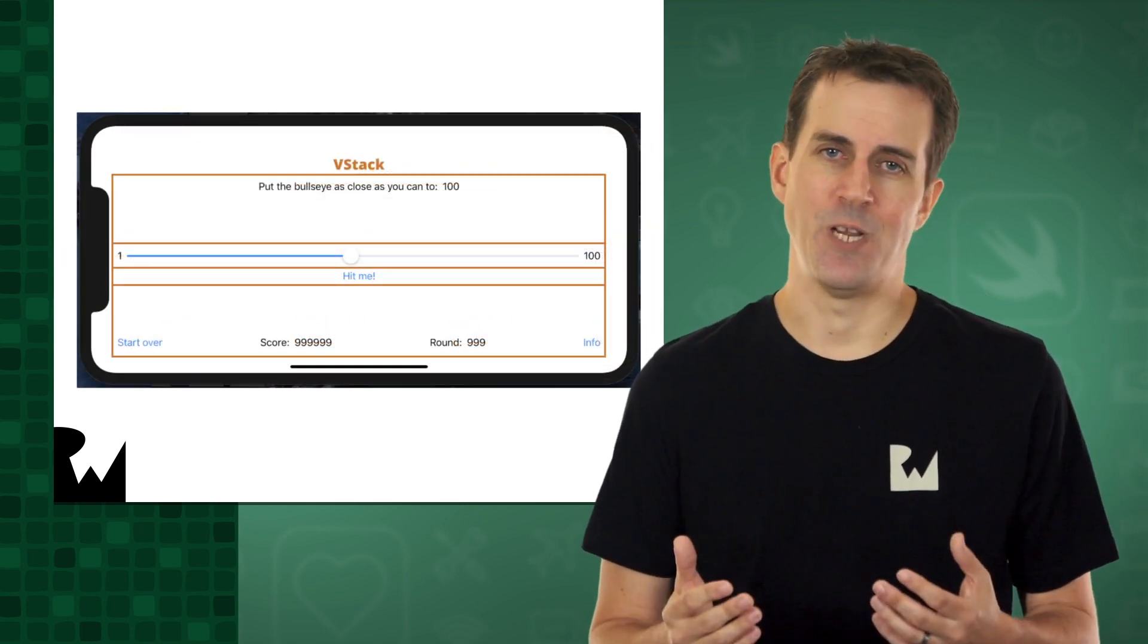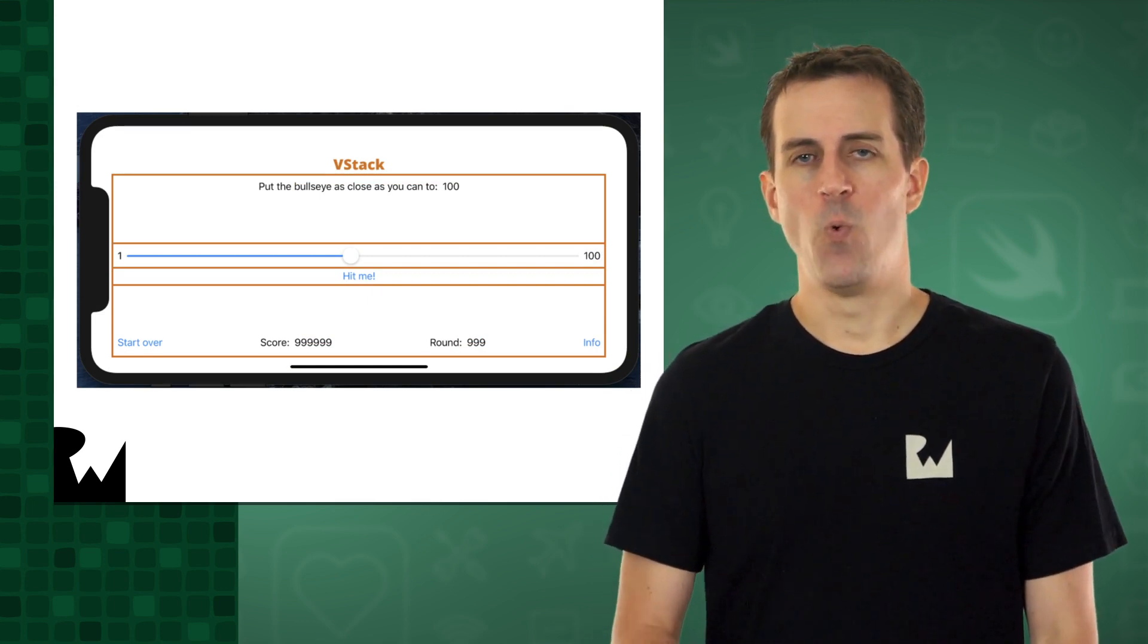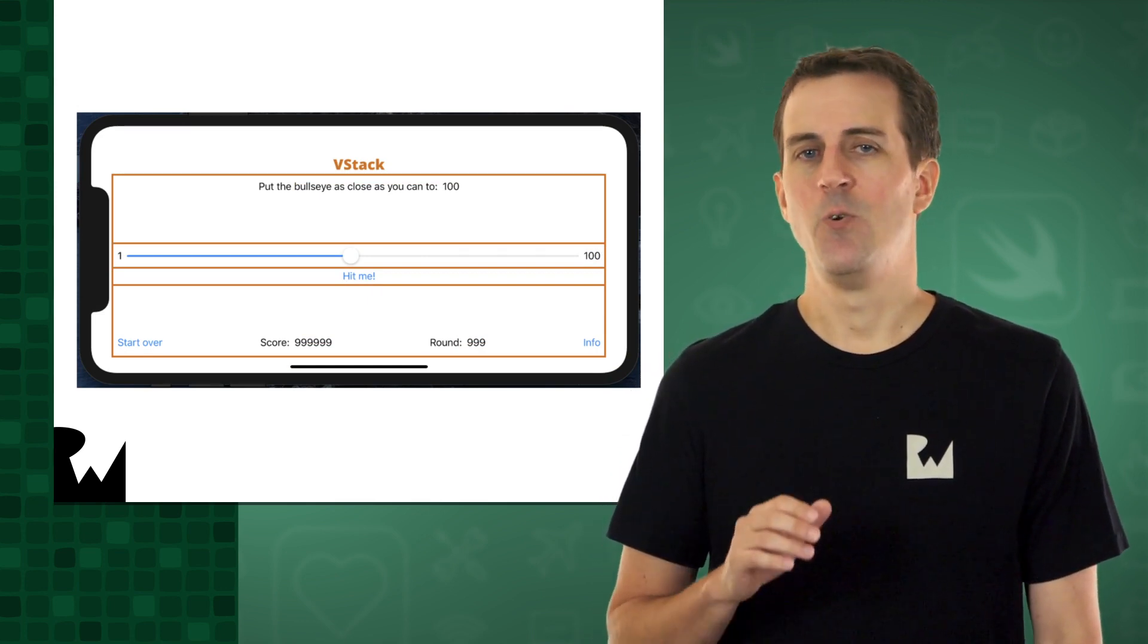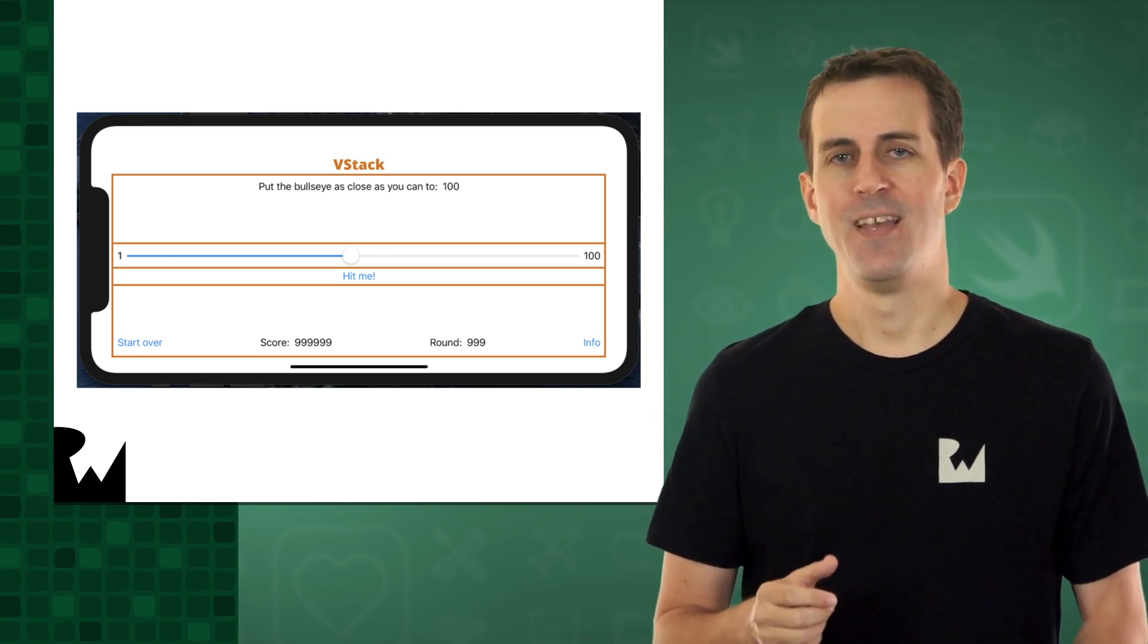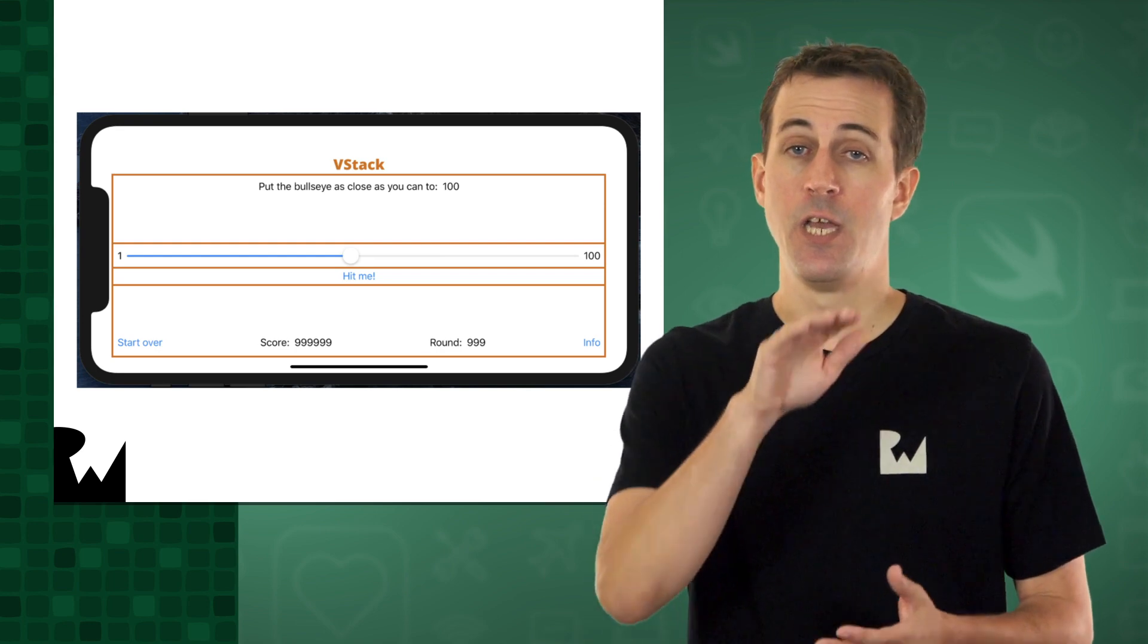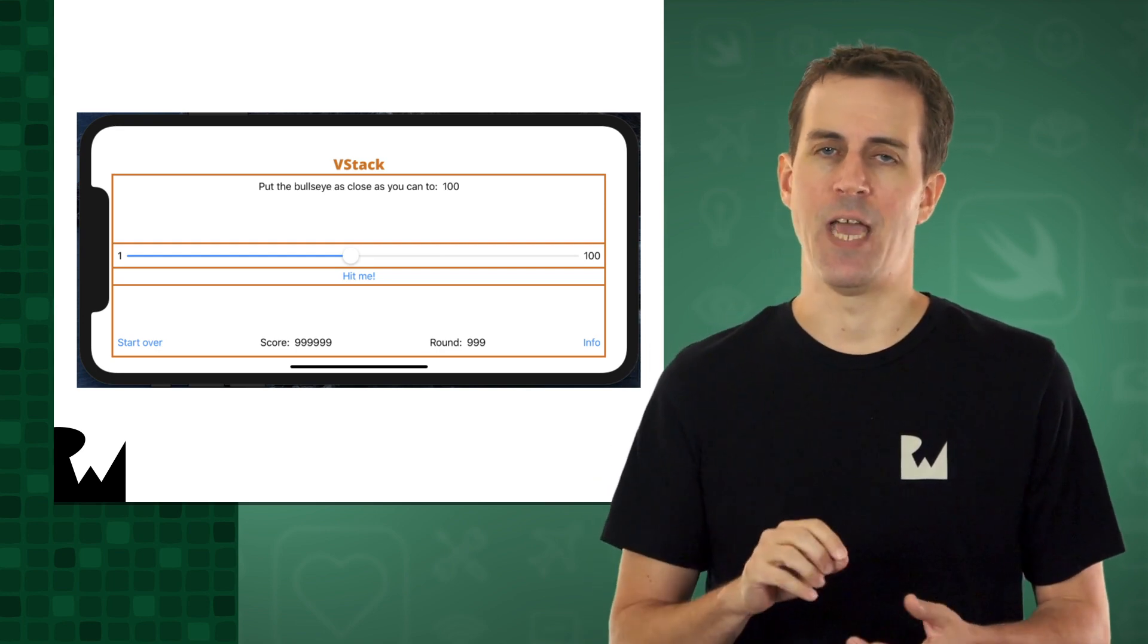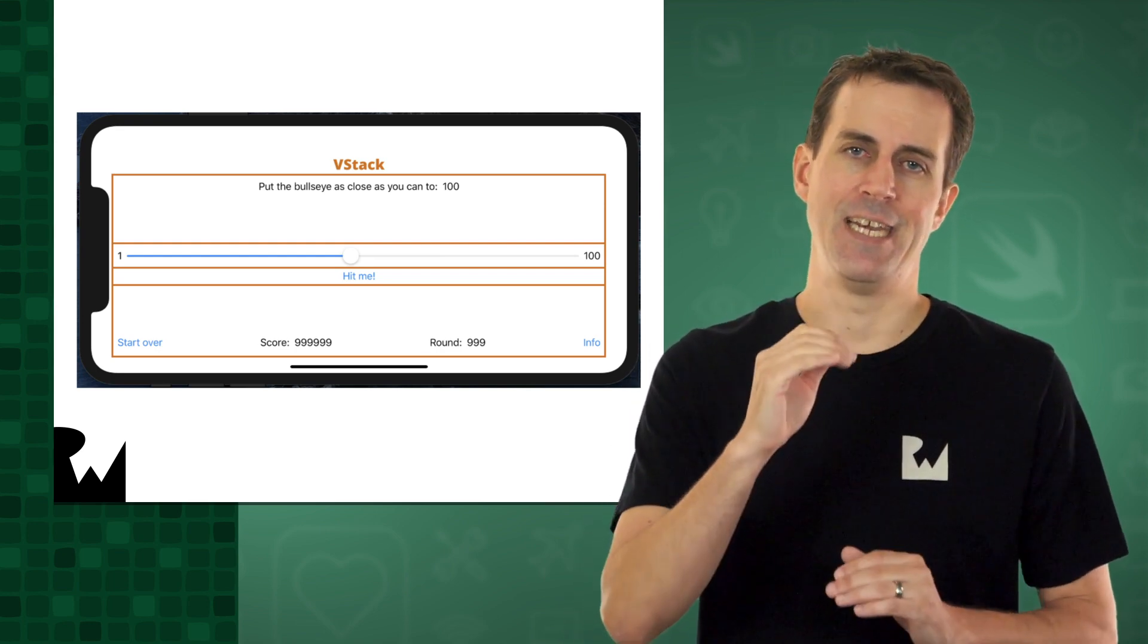Some of the views that go on your screen are invisible. One of these is VStack, whose job is to arrange its children views in rows. Effectively, the user interface for Bullseye is just four rows of views in a VStack, with a little bit of spacing added in.